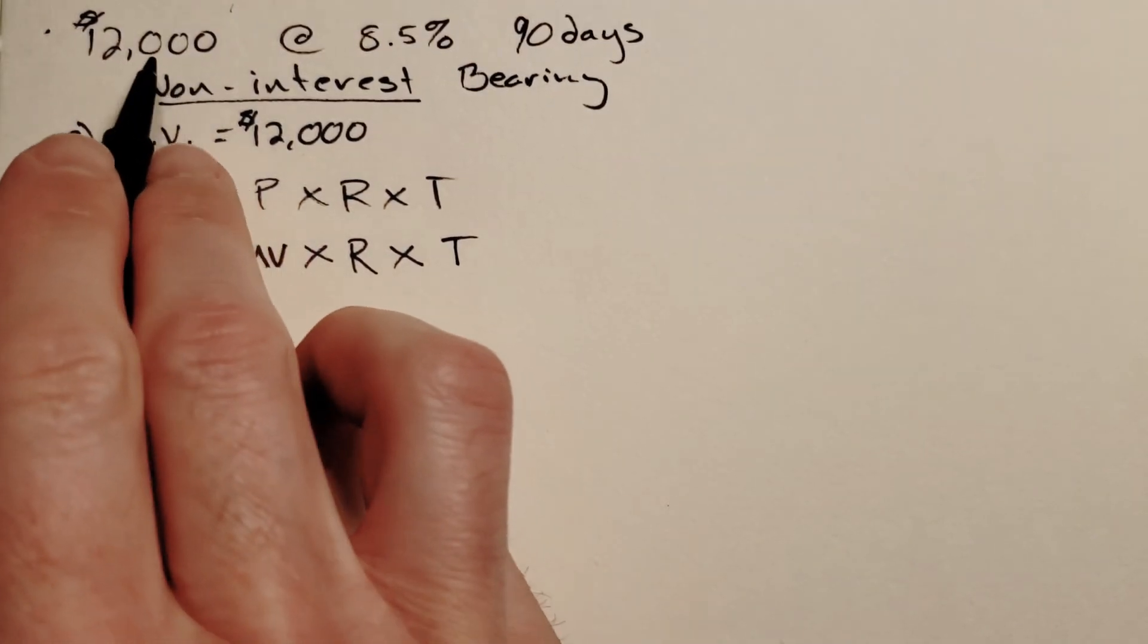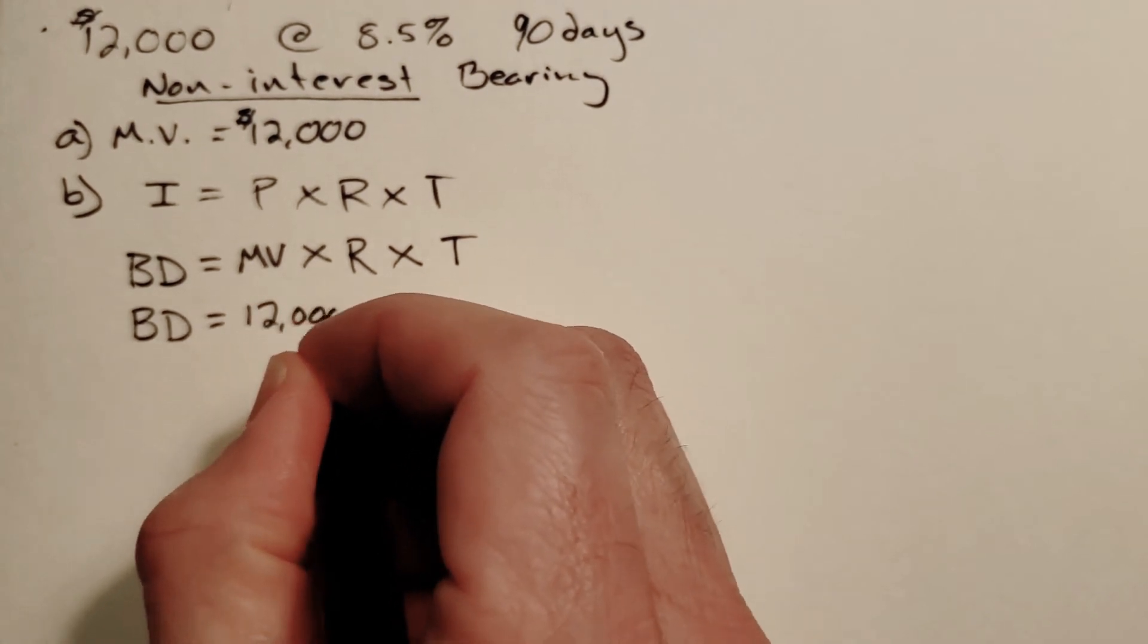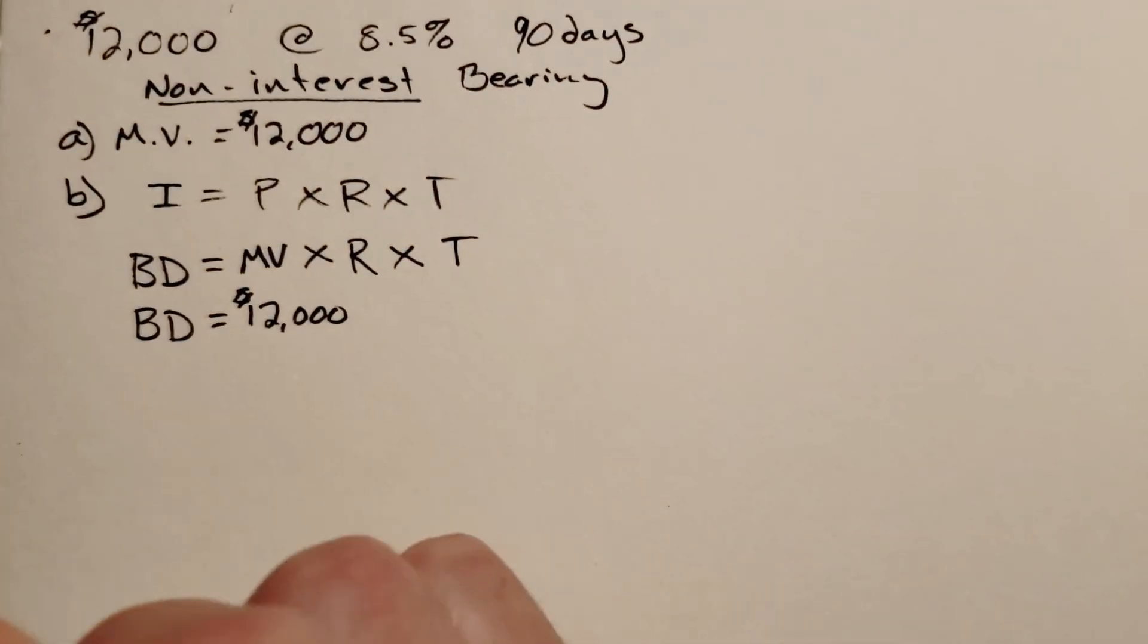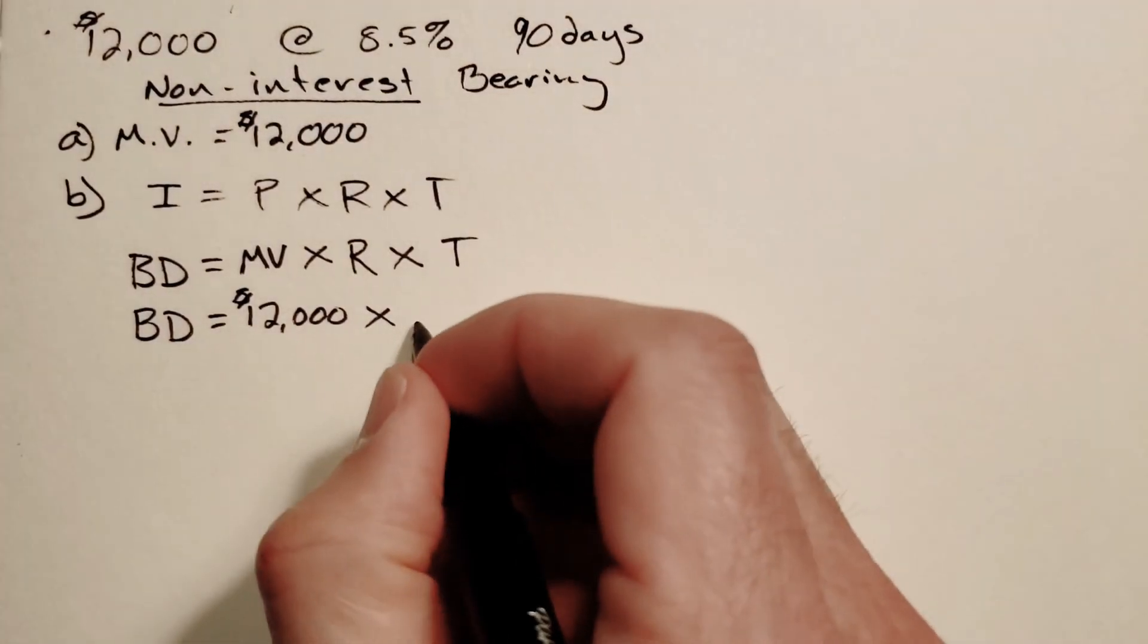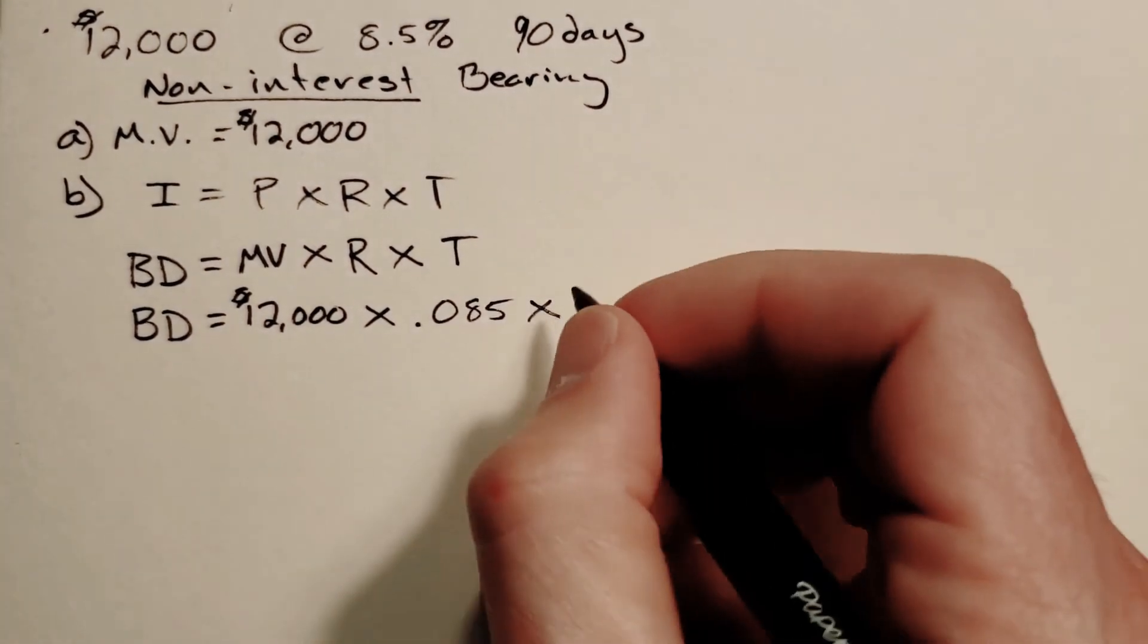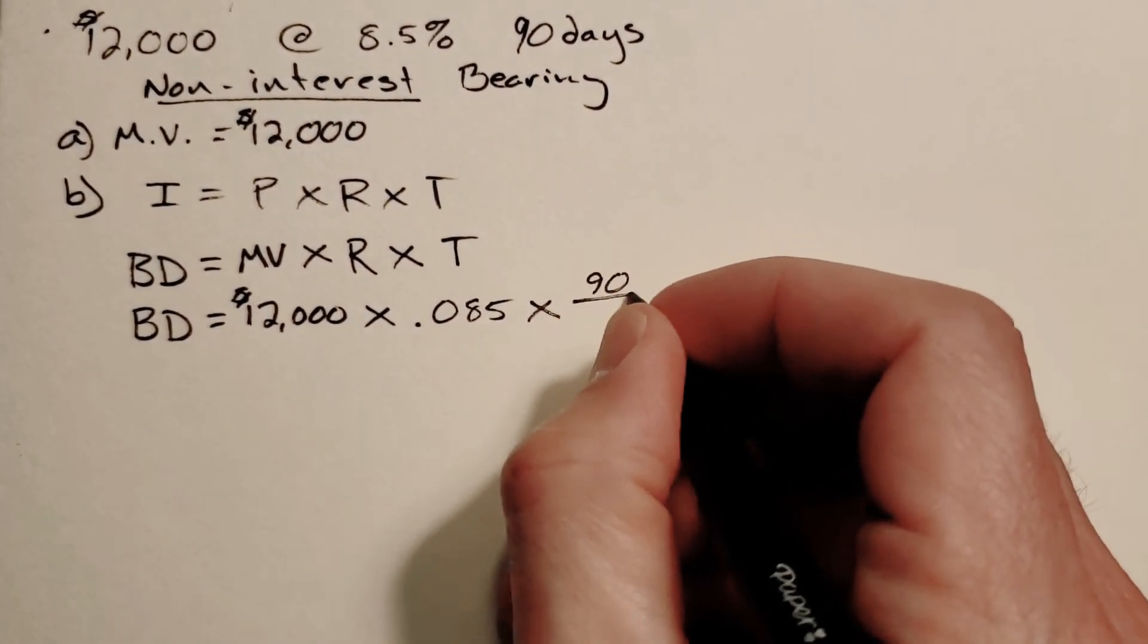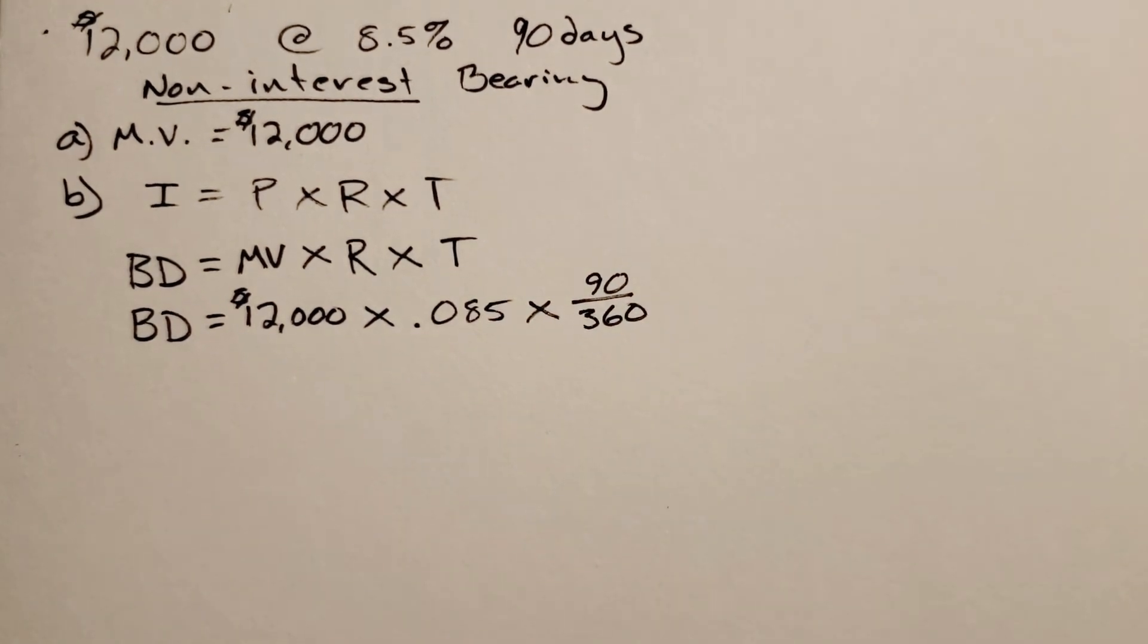For this example, we put in our maturity value which is $12,000 because that's what we're going to pay back to the bank. Remember we don't get all that $12,000 initially. Times the rate 8.5%, so 0.085, times time which is 90 days out of 360.